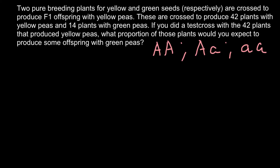We are told that two pure breeding plants for yellow and green seeds are crossed to produce F1 offspring with yellow peas. Pure breeding refers to plants that, when self-pollinated, would produce stable results. So if we self-pollinate plants with white flowers in the F1 generation, we would find only white flowers in the offspring and wouldn't find any other color.